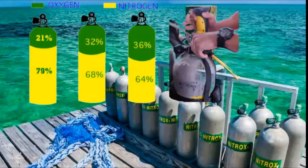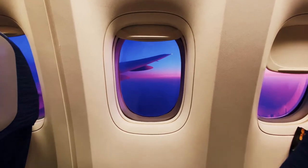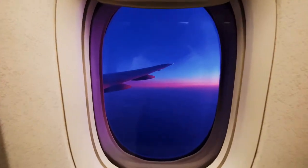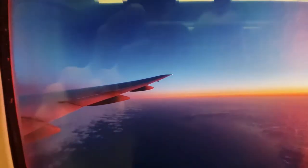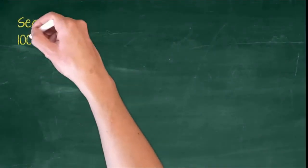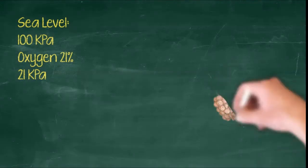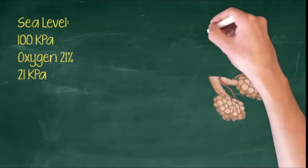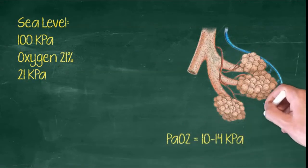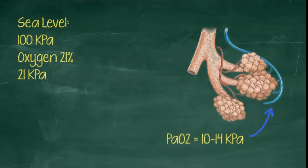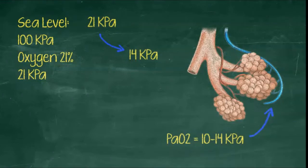This second consequence is often ignored but is actually significant in some interesting ways. To illustrate the first point, let's consider a passenger flight at 30,000 feet that suffers a decompression incident at that altitude. At sea level, atmospheric pressure is 100 kPa and oxygen at 21% is 21 kPa. The partial pressure of oxygen in the blood at the alveoli where oxygen exchange occurs is something like 10 to 14 kPa. It's the gradient between the relatively high atmospheric partial pressure at 21 kPa and the relatively lower PaO2 at 14 kPa that helps drive oxygen into the blood.